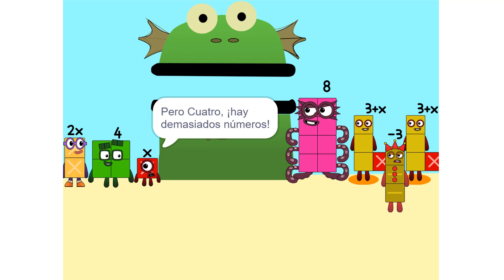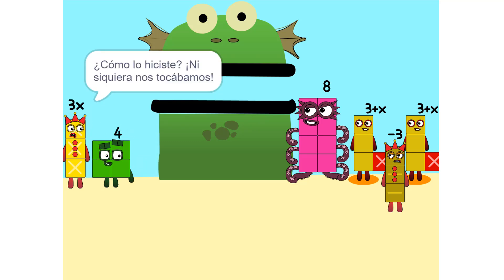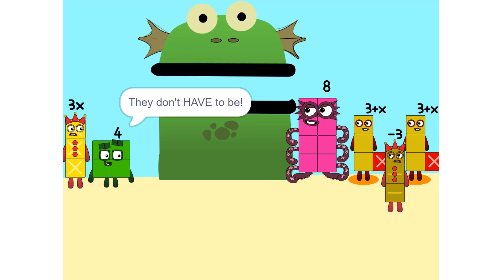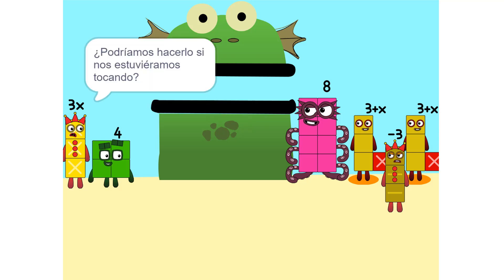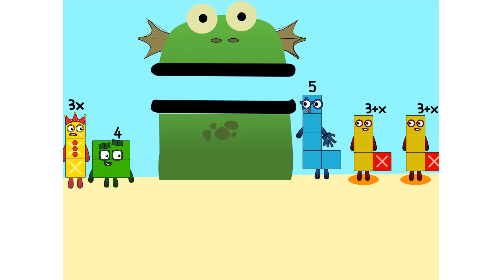Pero hay demasiados números. Nunca lo descubriremos. Sí, podemos. Si lo hacemos paso a paso y usamos un lápiz. Así que empecemos. Una cosa que podemos hacer es añadir estos dos juntos. ¿Cómo lo hiciste? Ni siquiera nos tocábamos. No tienen que serlo.